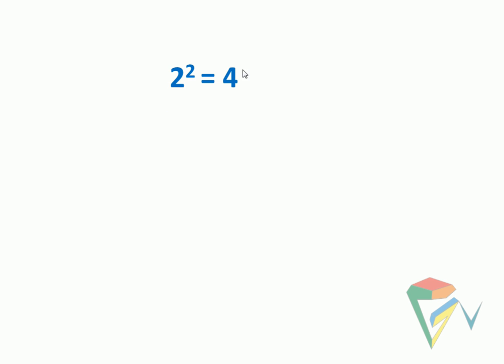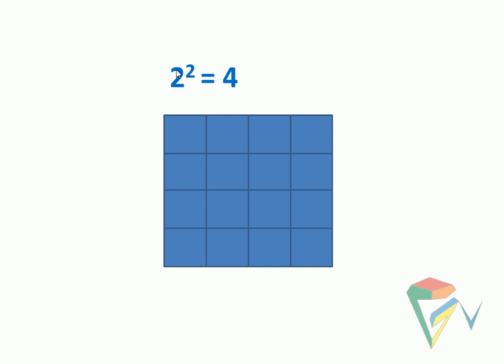So 2² equals 4. How will you take the four squares? The first one is here, 2, 3, and the fourth one. So 1, 2, 3, and the 4th one.